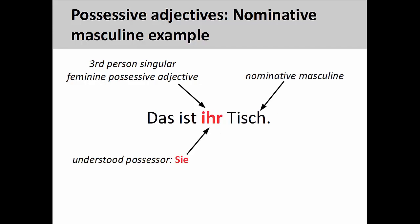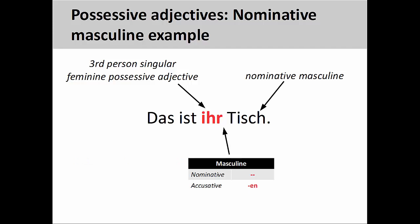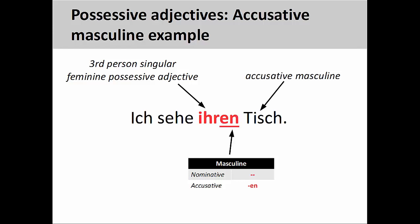Let's see what happens when we change the possessive adjective. In this sentence, the number and gender of the understood possessor agrees with the number and gender of the possessive adjective — it is third-person singular feminine. But since the masculine noun Tisch is still in the nominative case, the ending of the possessive adjective must also be masculine nominative. And when the masculine noun is in the accusative, the ending for the possessive adjective must also be masculine accusative.